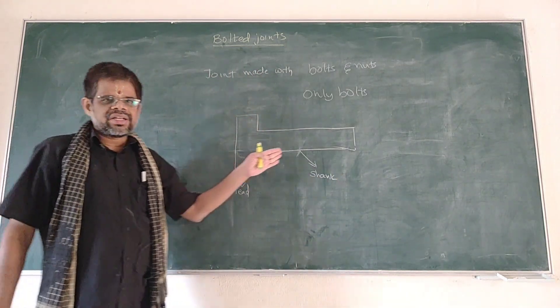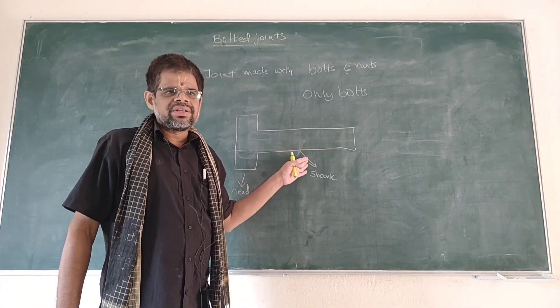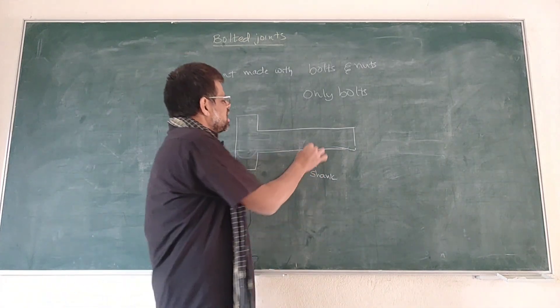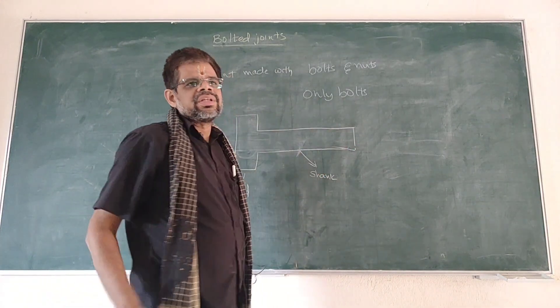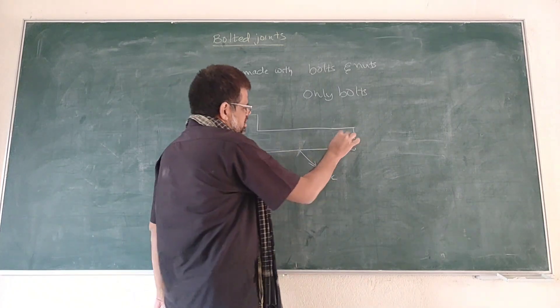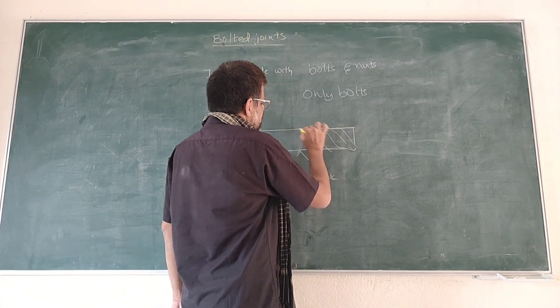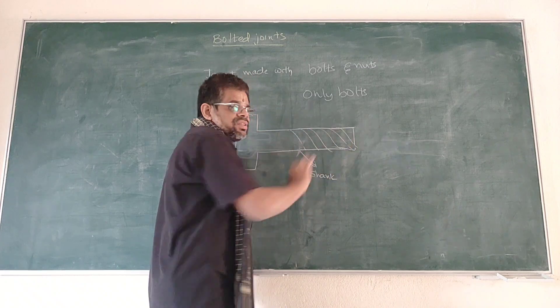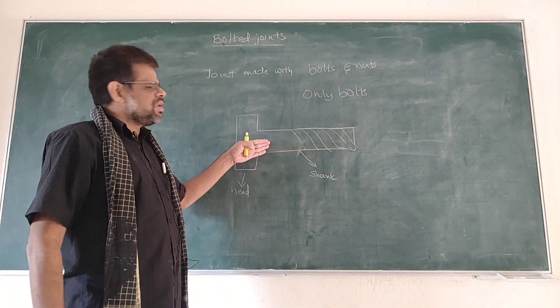The bolt shank consists of threads like this. The threads may be laid over part of the surface or over the entire surface. The threads may be laid depending on the requirement.